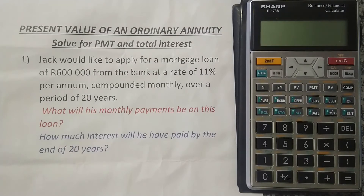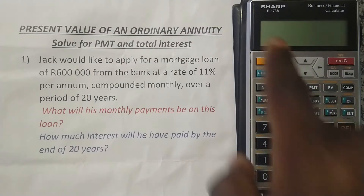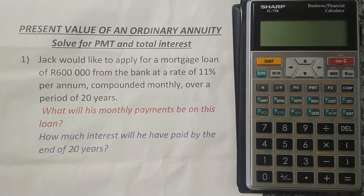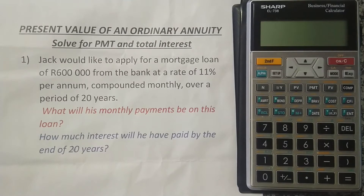We're going to do this using the financial calculator, specifically the Sharp EL738. So let's read what the question says. We are told that Jack would like to apply for a mortgage loan of six hundred thousand rand from the bank at a rate of 11 percent per annum compounded monthly over a period of 20 years. The question is: what will his monthly payments be on this loan, and how much interest will he have paid by the end of 20 years?